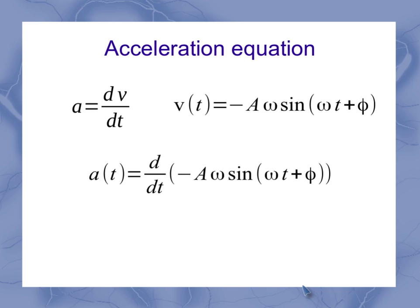So again, I'm taking the derivative with respect to time of this function. And this function includes a sine of a function with respect to time. So we're doing trig derivatives and the chain rule for derivatives. And once we've done that, we come up with minus A omega squared cosine of omega t plus phi.